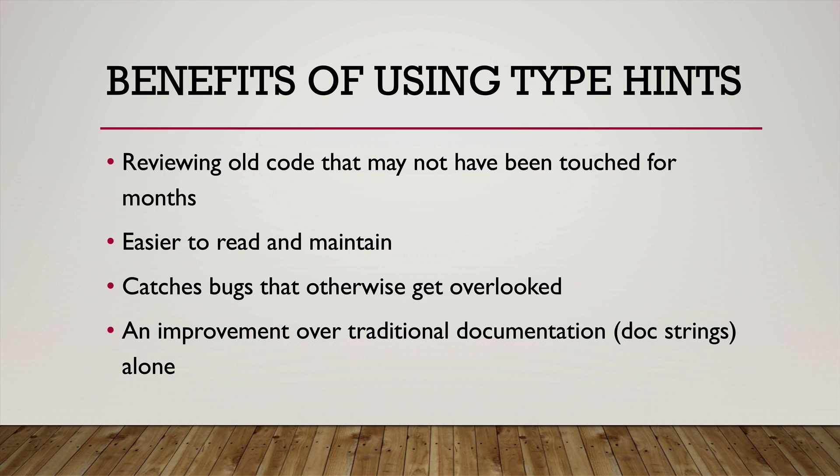It also catches bugs that otherwise get overlooked, and it's an improvement over traditional documentation. Doc strings are something that have been used traditionally, but one drawback is that sometimes somebody will refactor or change something and then not update the doc strings — that happens frequently. So this is basically another tool that you can have in your tool belt to make code easier to maintain.